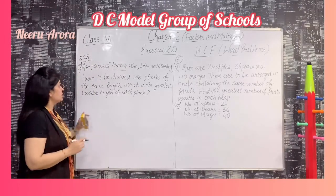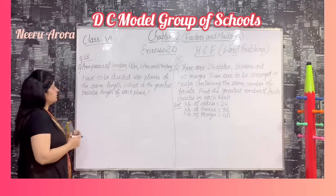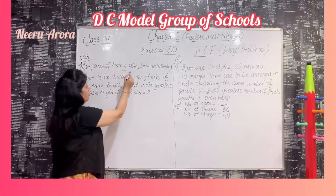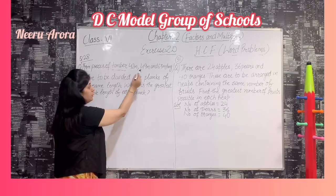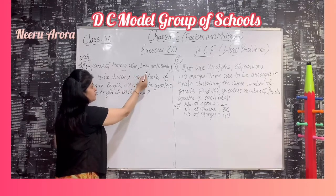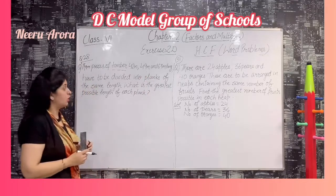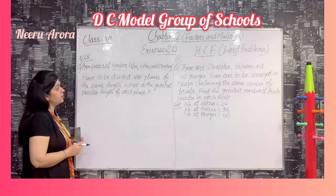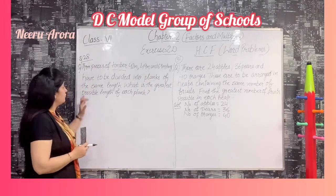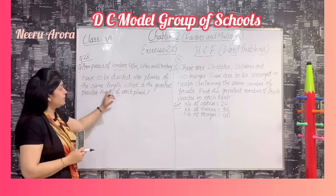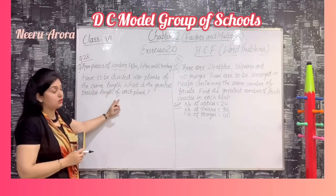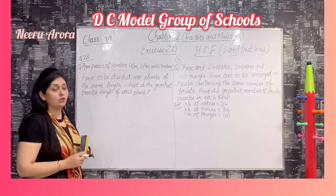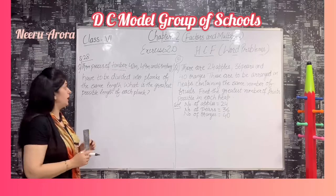So what is the question? Three pieces of timber — 42 meters, 49 meters, and 63 meters long — have to be divided into planks of the same length. What is the greatest possible length of each plank?